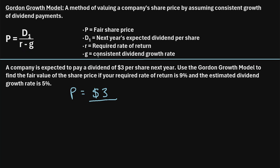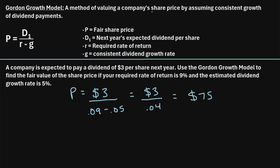In the denominator we have R minus G — the required rate of return minus the consistent growth rate. Our required rate of return is 9%, which is what we require to even invest in this stock. As a decimal that's 0.09, and then we subtract the growth rate of 5%, which as a decimal is 0.05. Simplifying, we get $3 divided by 0.04. Punching that into a calculator gives us $75. So according to the Gordon Growth Model, $75 is the fair share price for this company.